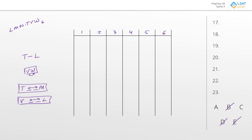Lastly, V and L have to have exactly two cities between them. Between A and C: A looks good — two spaces in between. C has three spaces in between, which doesn't work, so eliminate C. The best answer to question 17 is A. Plugging that into the board, we essentially have T, V, W, then M, L, N.